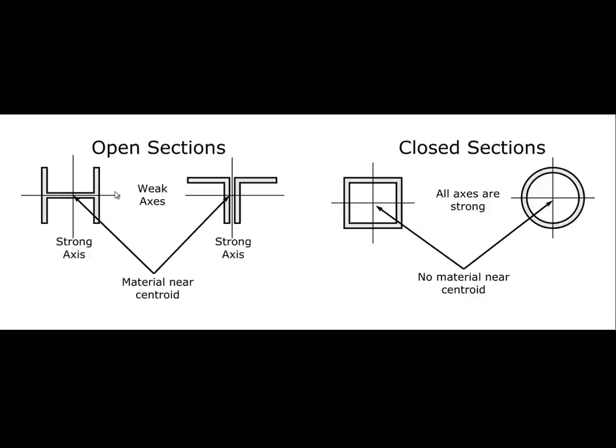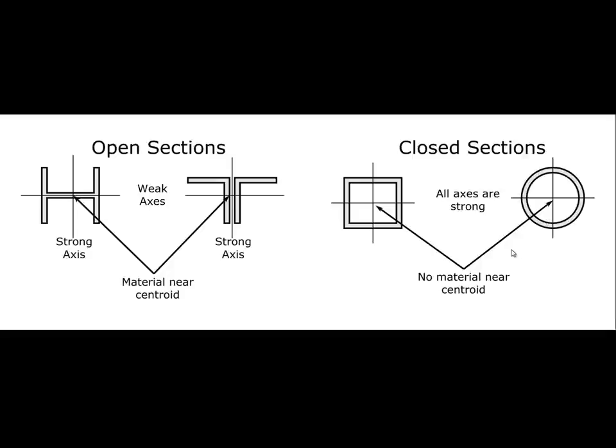Why would we ever use open sections in compression? They are cheaper to make, sometimes come in higher stress capacities, and when loads are so high that the cross section becomes inherently fat anyway, wide flange or open sections may be perfectly satisfactory. Additionally, connections are much easier: bolting through a hollow column tends to crush it, so connections for hollow or closed sections are more difficult to achieve.